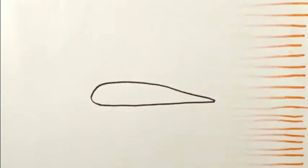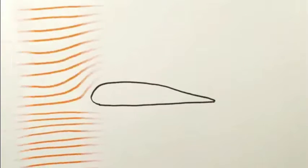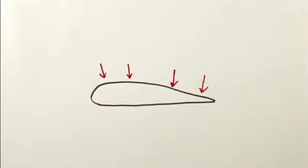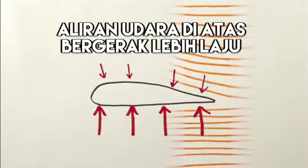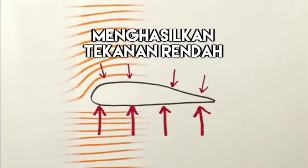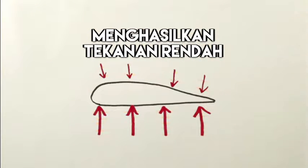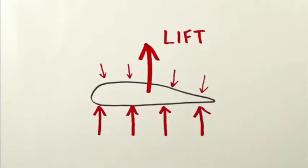Untuk mengaplikasikan prinsip Bernoulli ini pada sayap kapal terbang, ia direka dengan bentuk yang sebegini, yang dipanggil sebagai aerofoil. Secara teorinya, bentuk aerofoil ini akan menyebabkan perbezaan halaju aliran udara di bahagian atas dan bawah sayap kapal terbang. Aliran udara akan bergerak dengan lebih laju di bahagian atas dan ini akan mewujudkan tekanan yang lebih rendah di bahagian tersebut. Tekanan yang lebih tinggi akan menolak ke bahagian tekanan yang lebih rendah dan ini akan menghasilkan daya tujah ke atas.